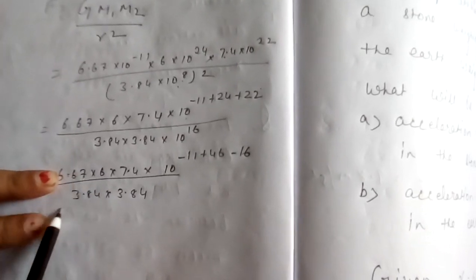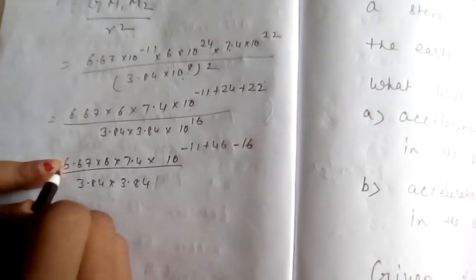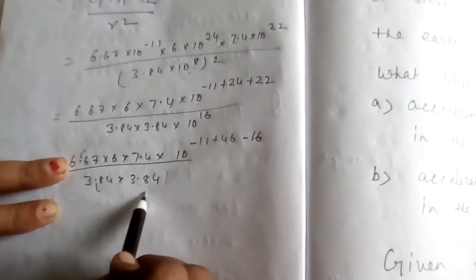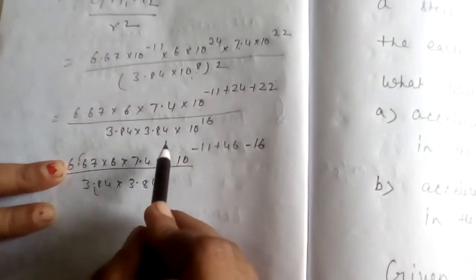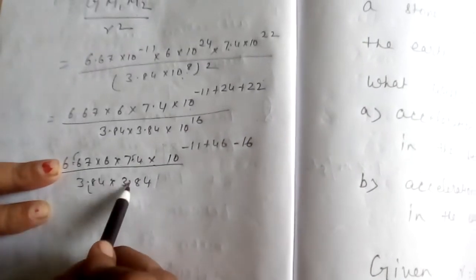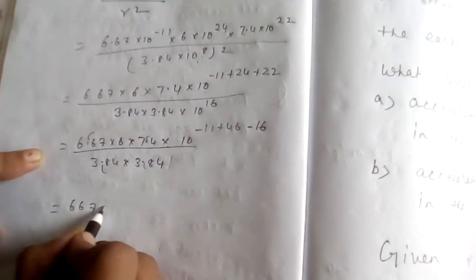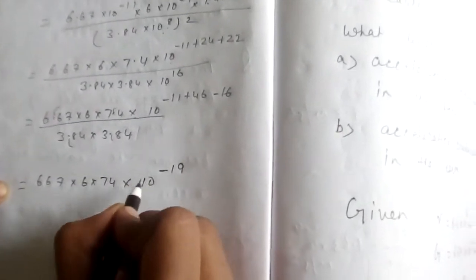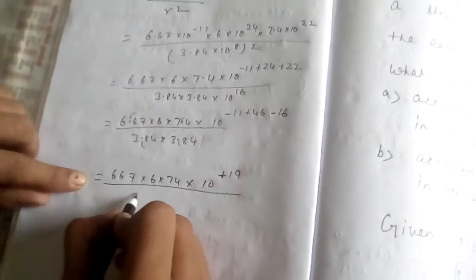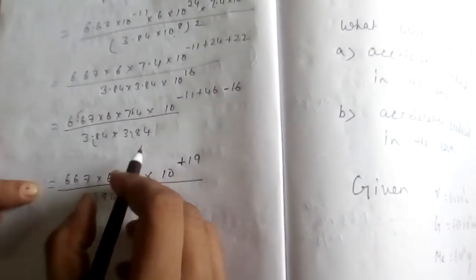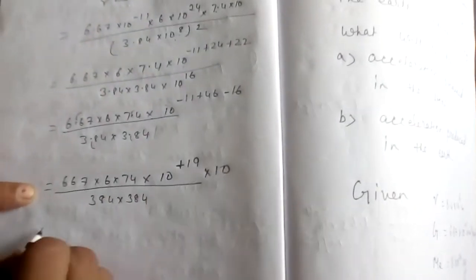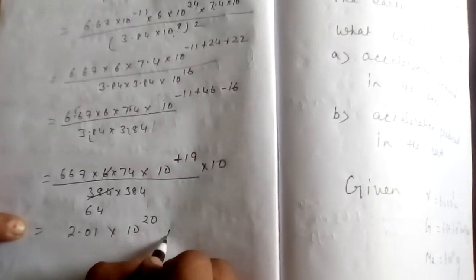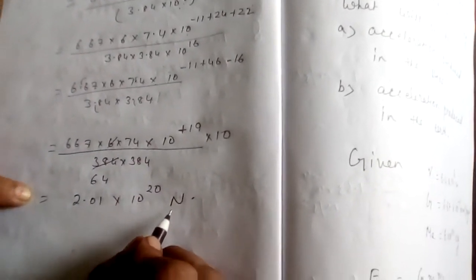After the decimal there are 2 digits in 3.84, meaning multiply by 100, and same for the other 3.84 — so the decimal points cancel. Similarly 7.4 has 1 digit after the decimal, and 6.67 has 2 digits after the decimal, so we rewrite as 6.67 × 6 × 74 in the numerator with 10 to the power +19, divided by 384 × 384 with a remaining factor of 10. When you solve this, you get the answer 2.01 × 10²⁰ Newton. So the force is 2.01 × 10²⁰ Newton.